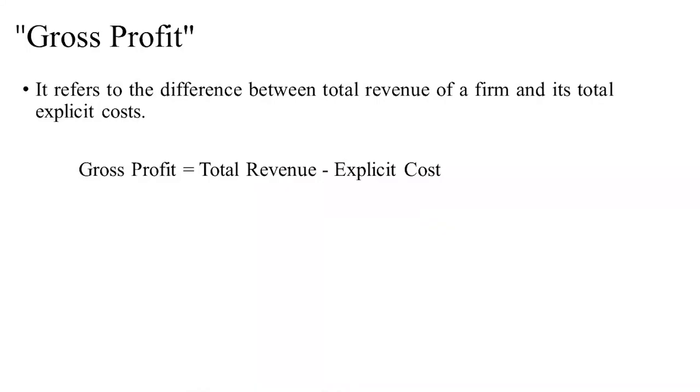Profit is mainly divided into two parts: gross profit and net profit. Gross profit refers to the difference between the total revenue of a firm and its total explicit cost. It is the profit a business makes after subtracting all costs restricted to manufacturing and selling its products and services. The formula is: Gross Profit = Total Revenue minus Explicit Cost.